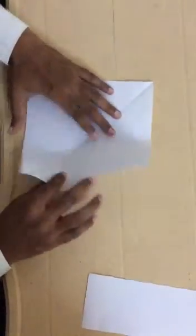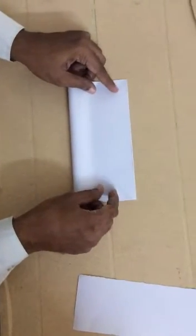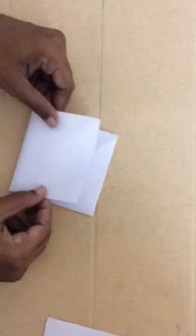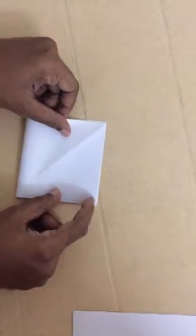So now the paper is in square shape. Fold this to half so that you get a rectangle. Second half you get a square shape.